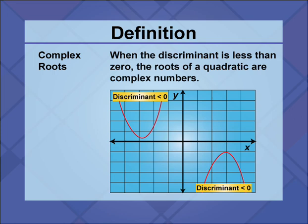In the parabolas shown, each has a discriminant less than zero. Therefore, neither parabola intersects the x-axis. This means that each parabola has complex roots. The orientation of the parabolas is different, but because they don't intersect the x-axis, this represents that they have complex roots.